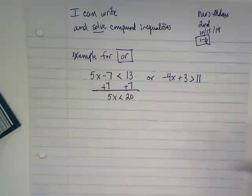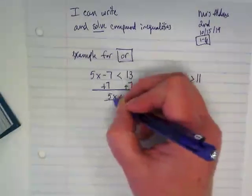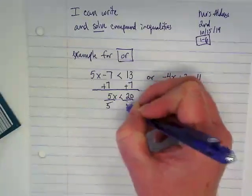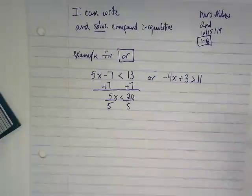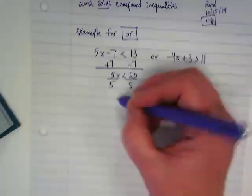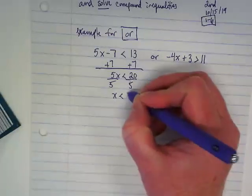5x is less than 20. What's our next step? Divide by 5. That's going to get our x by itself. We're dividing by a positive number, so we don't have to do anything to the symbol. x is less than 4.